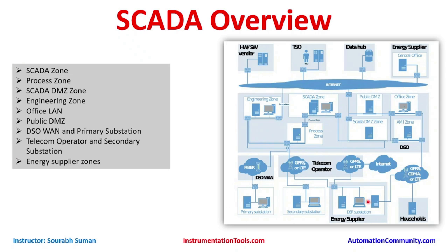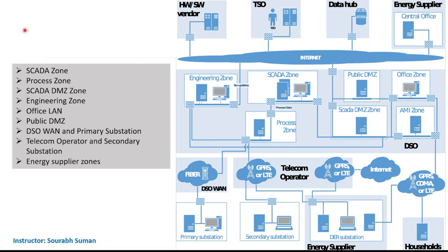We can see a primary substation, secondary substation, DER substation, and household — all connected to some process zone, SCADA DMZ zone, or AMI zone. One thing to notice is that all these communications are not wired. It could be fiber, GPS, LTE, or wireless communication such as GPRS or LTE, going directly to the internet or using a cell tower via CDMA or LTE.